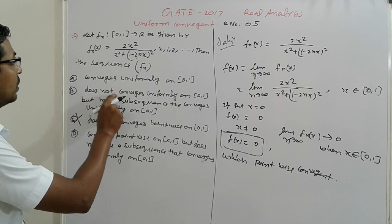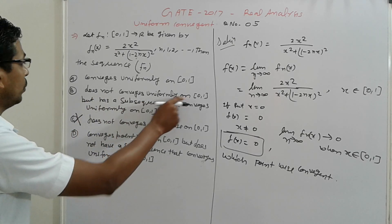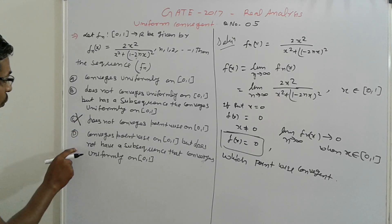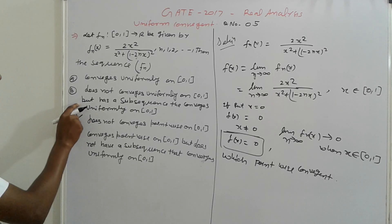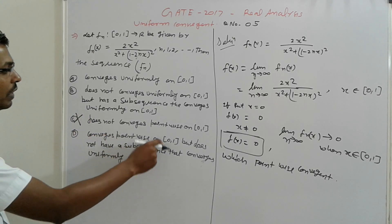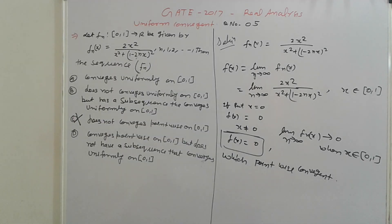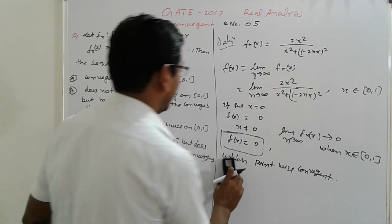Next, does not converge uniformly on [0,1] and have a converge check on your family. There are two options, point here is not given, here converge point-wise and 0, but and another here. So third option is wrong, next go to the another.